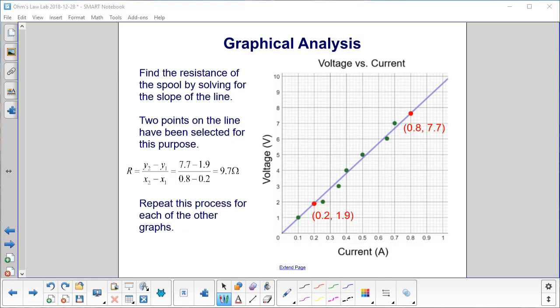Find the resistance of the spool by solving for the slope of the line. Take two points on the line, and notice they don't have to be the actual measured points. We want points on the line where it intersects one of the bold lines. So we have this point here, and this point here. The slope is delta y over delta x, which is 9.7, so the resistance of this particular spool is 9.7 ohms.